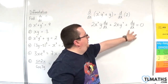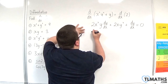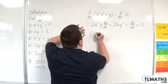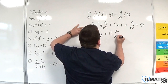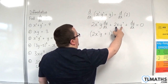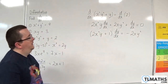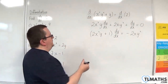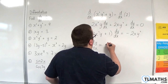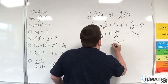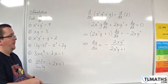We now have two terms with dy by dx, so we factorise dy by dx out: 2x squared y plus 1, all times dy by dx, equals minus 2xy squared. Dividing both sides by the bracket gives dy by dx equals minus 2xy squared over 2x squared y plus 1.